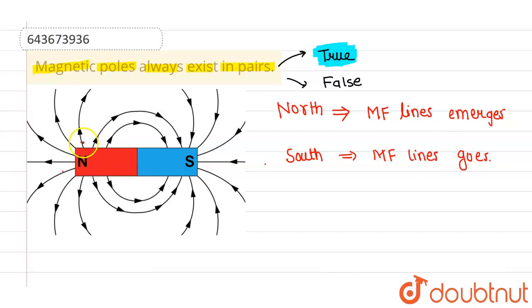then magnetic field lines come from north pole, then there must be a point at which all these lines end up at a point, and that point is south pole. That's why magnetic poles always exist in a pair.